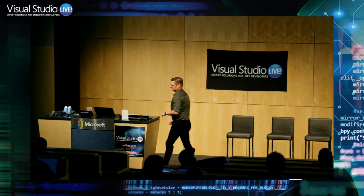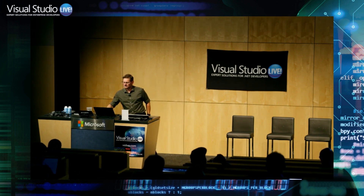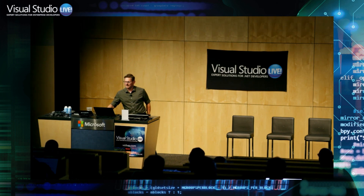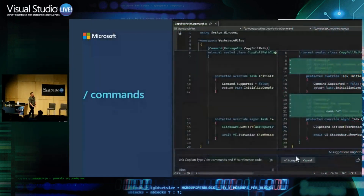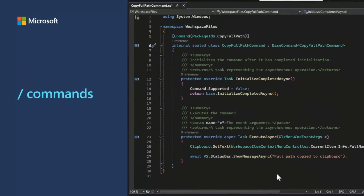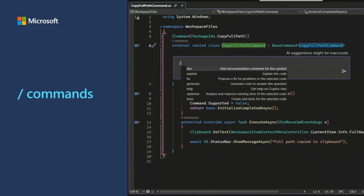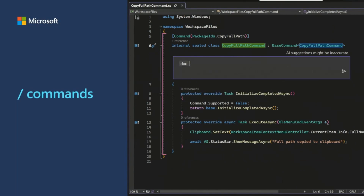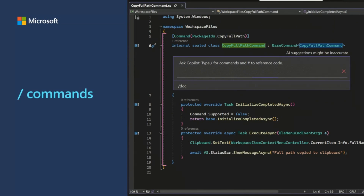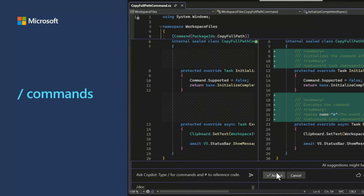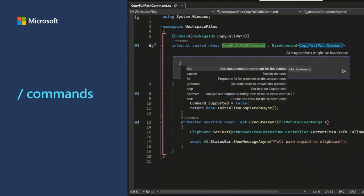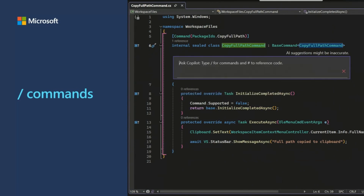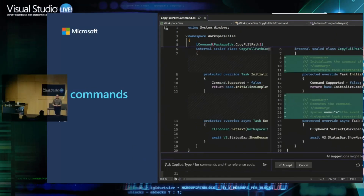Question from the audience: how do you effectively use inline chat? Is it by code selection? The inline chat knows where your caret is. If your caret is right under the class definition, your context is the whole class. If your caret is inside an if statement, inside a for loop, inside a method, then that is your context. If you're in a method and type slash-doc, it documents just that method; if you do it at the class level, it does the whole class. And if you make a selection, that is what you're working with. It's aware of your situation and status in the editor.